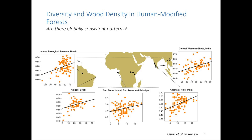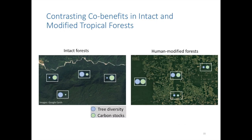We conclude that while there might be co-benefits between carbon-based management and tree diversity conservation, where these co-benefits are realized depends on what sorts of forests one is looking at. Within intact forest landscapes, where relationships between diversity and carbon appear weak, one would need standalone strategies to conserve both biodiversity and carbon. Whereas in human-modified forests, one might expect greater congruence between diversity and carbon, and therefore carbon-based forest conservation and management can yield more substantial tree diversity gains.